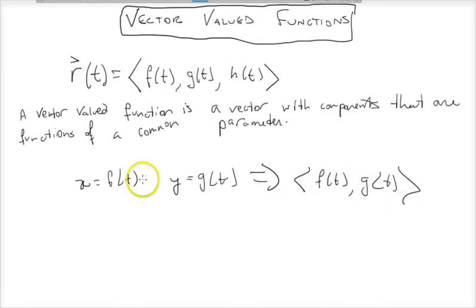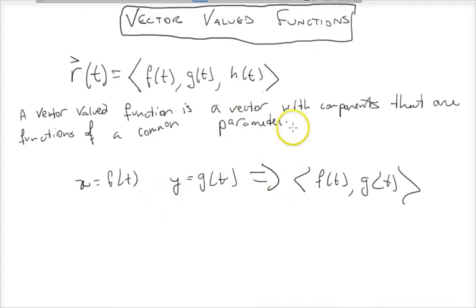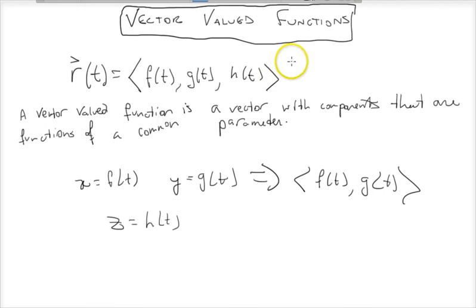That's a two-component vector-valued function — a vector in 2D space. The kind we're going to be talking about in this course is just a parametric equation with a third z-component, namely h of t. It's just easier to express these parametric equations as a three-dimensional vector to save room in writing, and it gives us one nice vector to talk about when discussing the entire parametric equation.